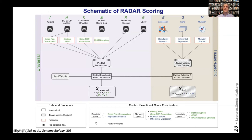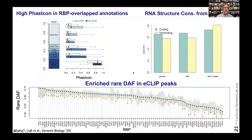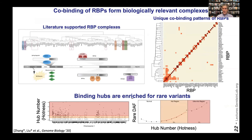We built a simple pipeline called RADAR for putting all this data together to annotate variants. We combine it with conservation data across organisms and within the human population. Since we're looking at RNAs, we include secondary structure. We use an entropy weighting scheme to combine all these features into a score, and also combine with a tissue-specific score related to the cell line or tissue context. Each binding protein site is conserved to a different degree, highlighting the importance of conservation.